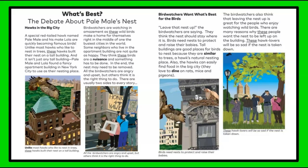Hawks in the big city. A special red-tailed hawk named Pale Male and his mate Lola are quickly becoming famous birds. Unlike most hawks who like to nest in trees, these hawks built their nest on a tall building — and it isn't just any tall building. Pale Male and Lola found a fancy apartment building in New York City to use as their nesting place. Bird watchers are watching in amazement as these wild birds make a home for themselves right in the middle of one of the busiest cities in the world. Some neighbors who live in the apartment building are not quite as happy — they think these birds are a nuisance and something has to be done. In the end, the nest may need to be removed. All the bird watchers are angry and upset, but others think it's the right thing to do. There are usually two sides to every story.